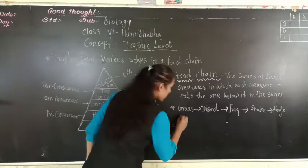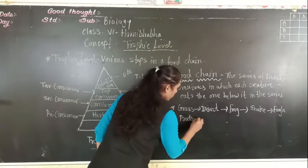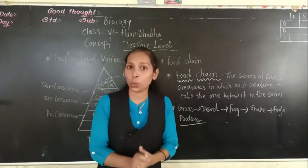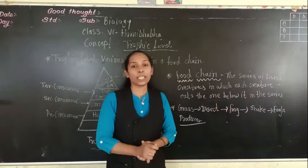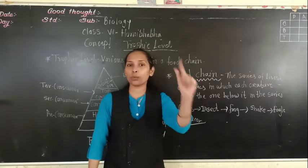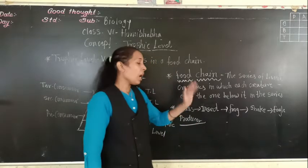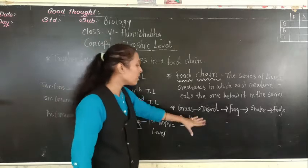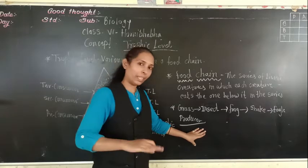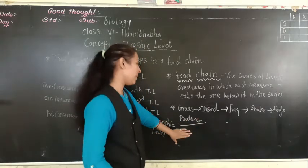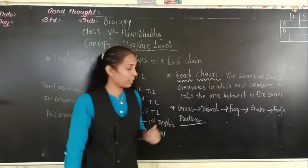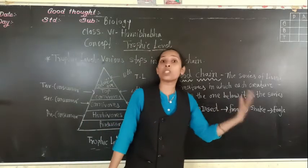So here we can say that grass is the producer. As we know, why are green grass or green plants called producers? Because they are making their own food, and that is the reason they are called producers. Every time the green plants are in the first position of the food chain. Each and every animal, for their food purpose, directly or indirectly depends on the green plants.